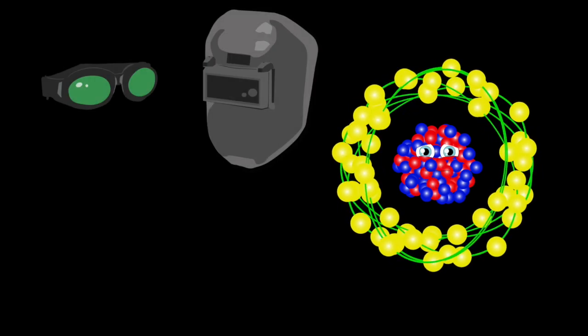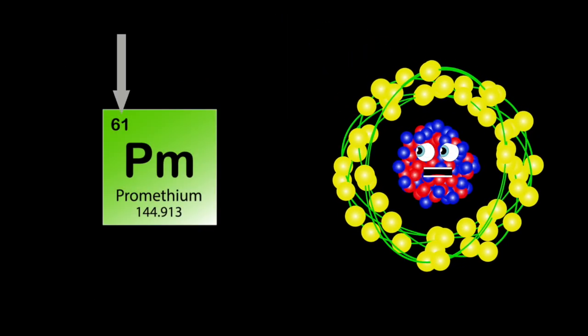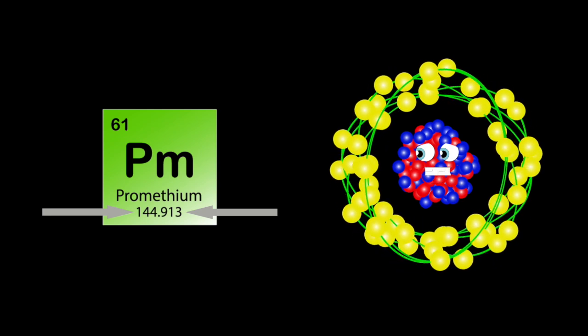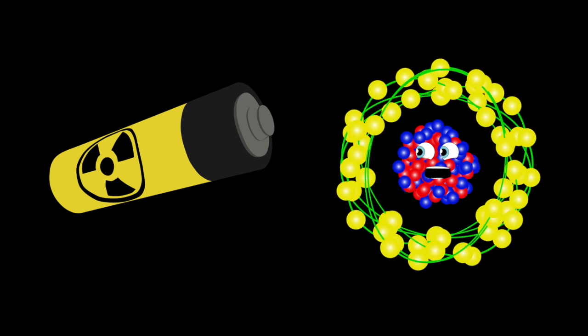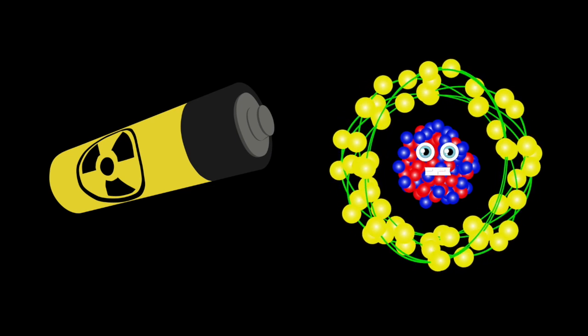My atomic number's 61, I am promethium, my atomic mass is 145 and my symbol is PM. I could be used to make a nuclear battery, with a lifespan of 5 years that is satisfactory.